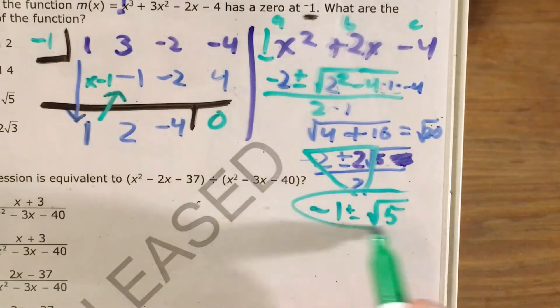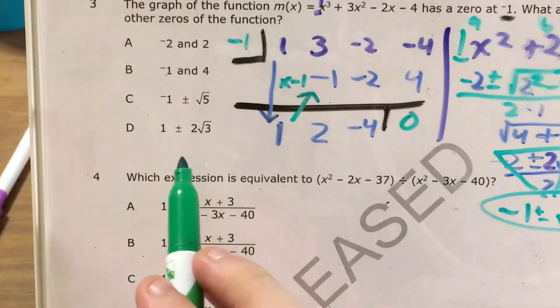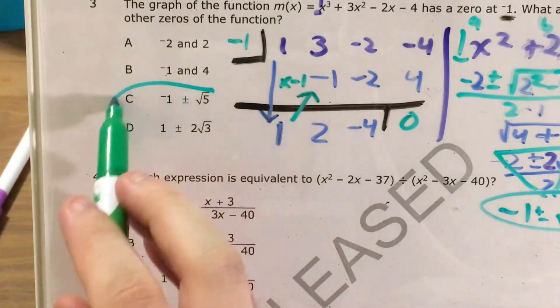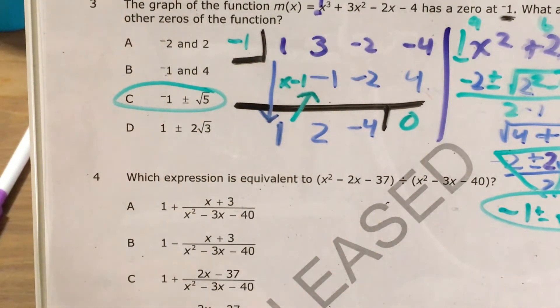So now that I know my other two zeros, after all that work, I come over to my answer choices and choice C matches exactly what I got from all that work.